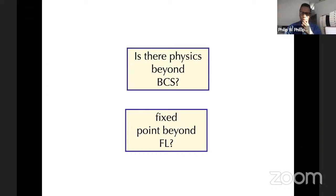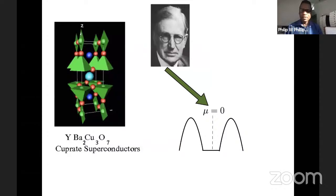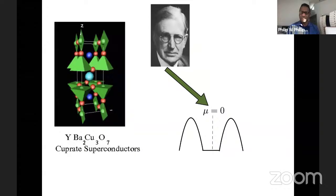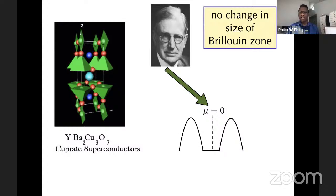We suspect that is the case because the cuprates are very different — they don't start off as Fermi liquids; they start off as Mott insulators. There are many examples of Mott insulators. The key point about Mott insulators is that you open a gap at the chemical potential with no change in the size of the Brillouin zone, and that will be very important in a few minutes.